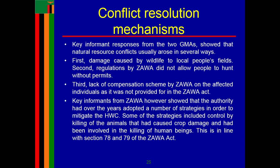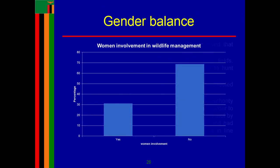On conflict resolution, key informants from the two GMAs showed that natural resource conflicts arose in several ways: damage caused by wildlife to local people's fields, regulations by ZAWA that did not allow people to hunt without payment, and a lack of compensation scheme in the ZAWA Act. The key informants from ZAWA noted that the authority had over the years adopted strategies to mitigate human-wildlife conflict. The study also revealed that gender balance was lacking, as most women were not involved in the management of wildlife resources.